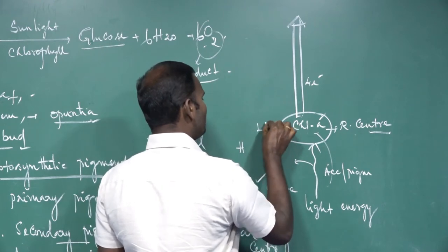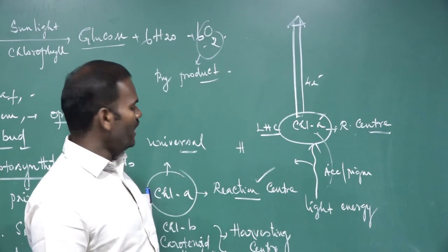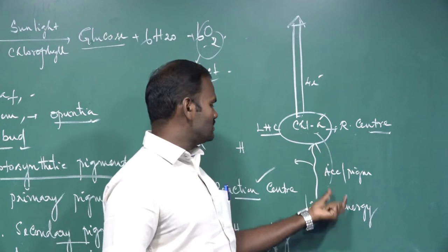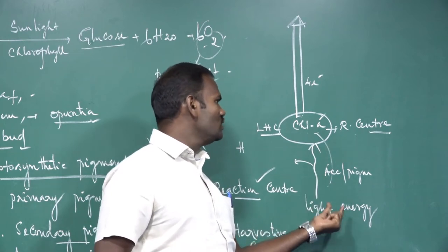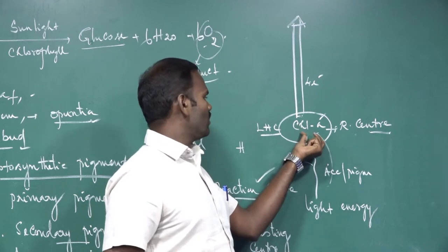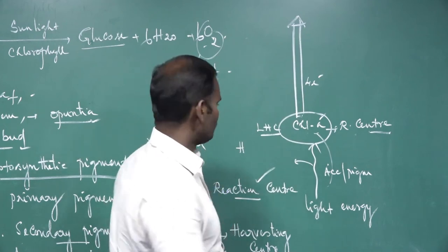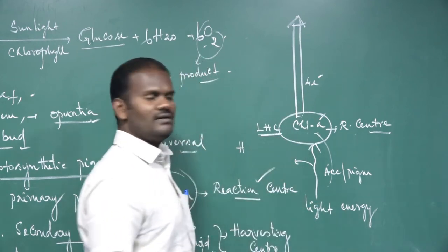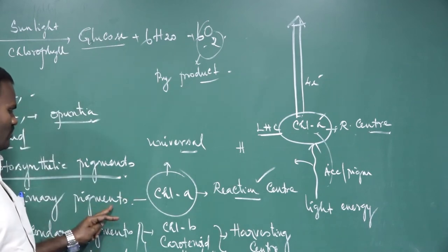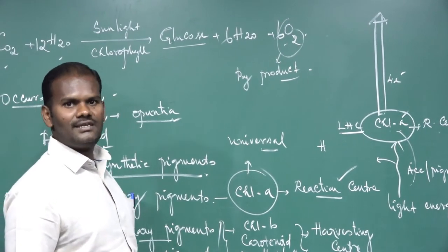The accessory pigment is called the light harvesting center, or LHC. Why do we call it a light harvesting center? Because it transfers the absorbed light energy into the reaction center, which is chlorophyll A. Then the chlorophyll molecule gets excited and the photosynthetic reactions take place. These are the major differences between primary pigment and accessory pigment: primary pigment is chlorophyll A, and other than chlorophyll A are called accessory pigments.